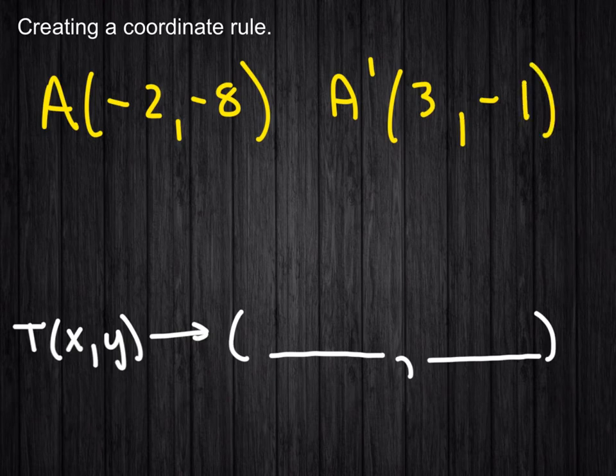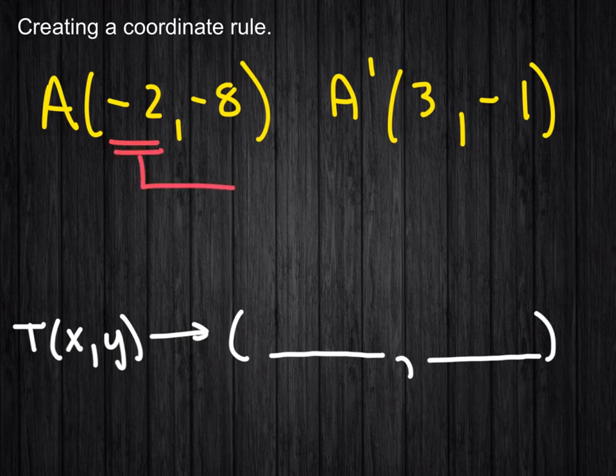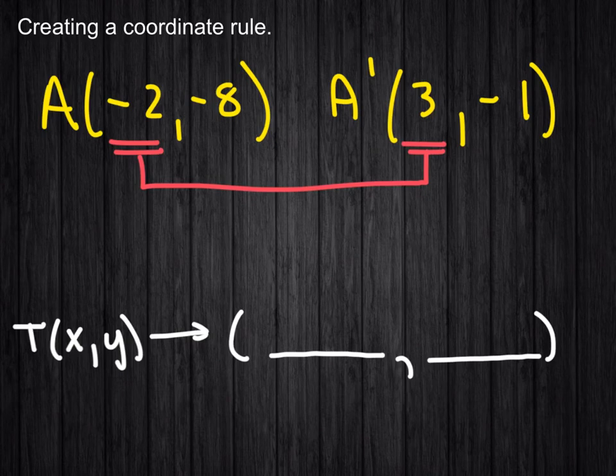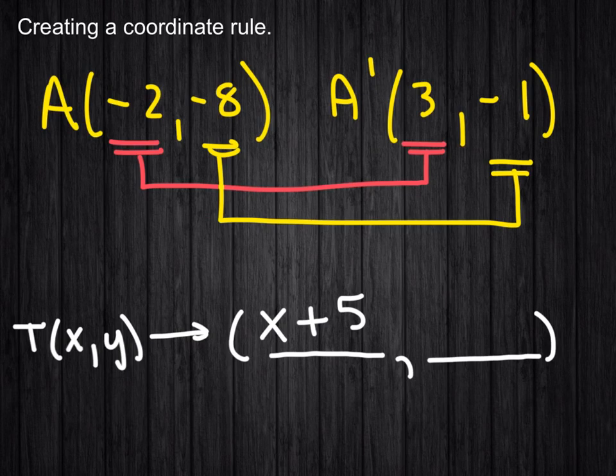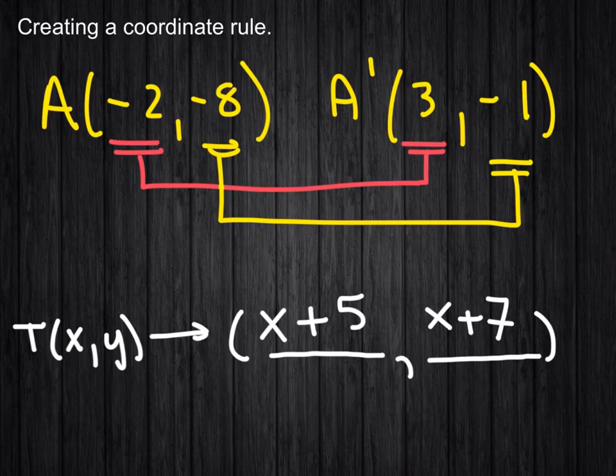And again, what we would be doing is we would be comparing the x value here of the pre-image to the image here. And magically enough, this also went, actually in this case, added 5. And then, if I do a quick comparison of negative 8 to negative 1, that added 7 to our group. So, that's all it's asking to do in this kind of question.